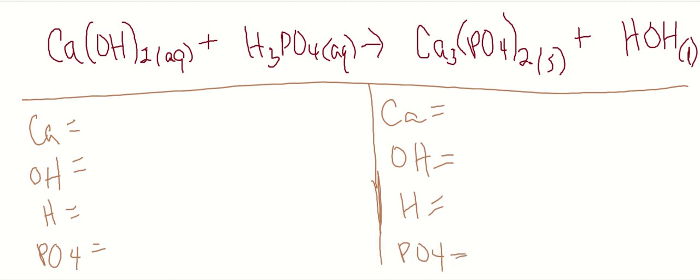Let's count them up. On the reactant side, I have one calcium, two hydroxides, three hydrogens, and one phosphate. On the product side, I have three calciums, one hydroxide, and one hydrogen right there, and two phosphates.